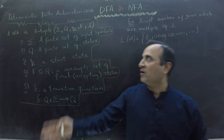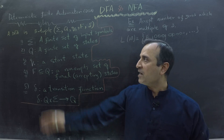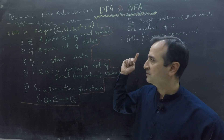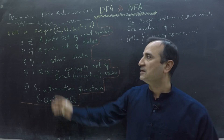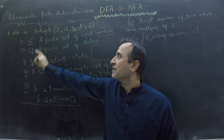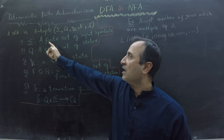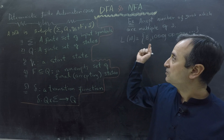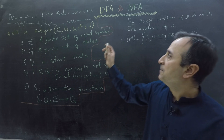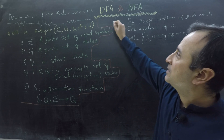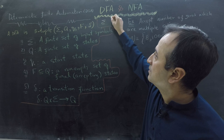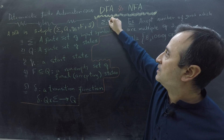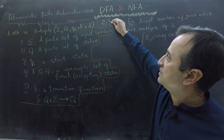We have to make an automaton for that language and explain this definition using this example. Sigma is a finite set of input symbols. For this example, my sigma has two input symbols: 0 and 1.